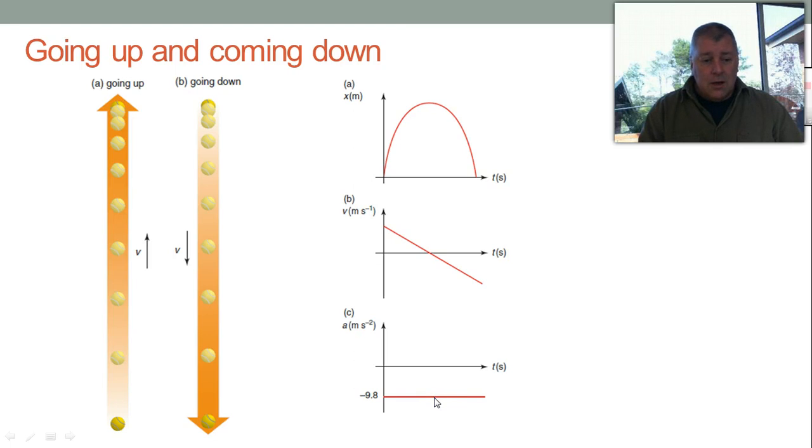Gravity is still acting there. A lot of students like to think, especially when they're asked what is the acceleration at the highest point, that gravity turns itself off. It doesn't. If gravity turned itself off, the ball would just hover there forever, because there needs to be a force acting on it to make it come down. And so it's always minus 9.8.